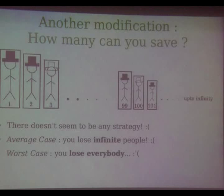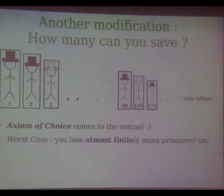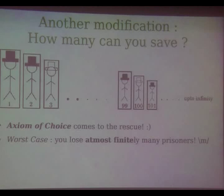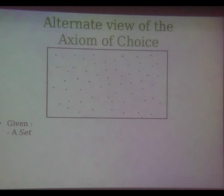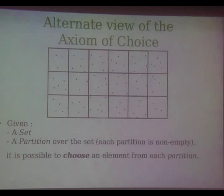But the axiom of choice comes to the rescue, which gives the solution where in the worst case you lose at most a finite number of people. Before I give the strategy for the problem, I will give an alternate view of the axiom of choice. Given a set and a partition over that set where each partition is non-empty, then I can choose an element from each partition — you can see that this is the same as what I said previously. The set can be infinite, the number of partitions can be infinite and so on.